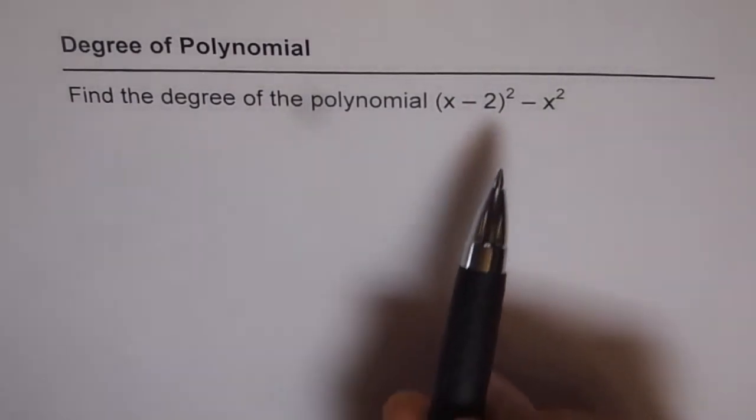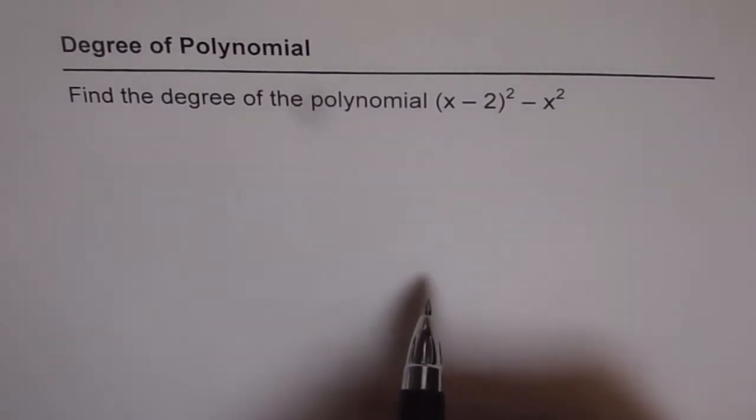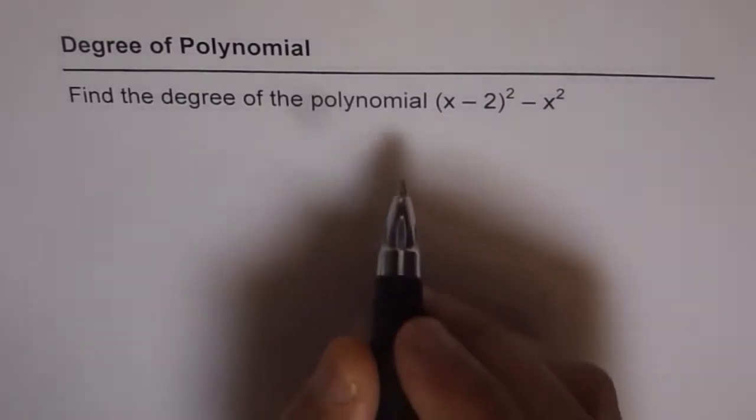Now when you look at it, it seems that 2 is the degree of the polynomial. But if you simplify, you may get a different result. So let's simplify and check.